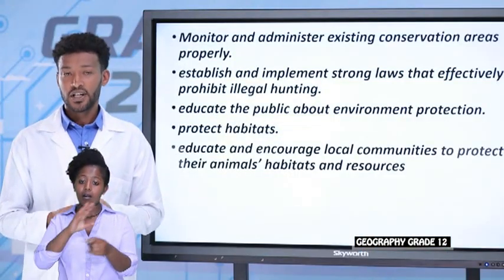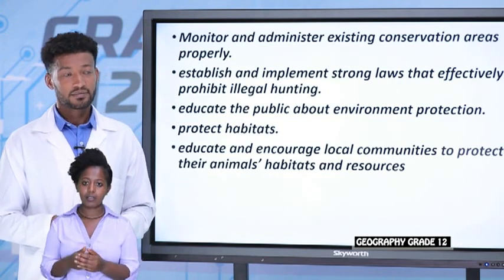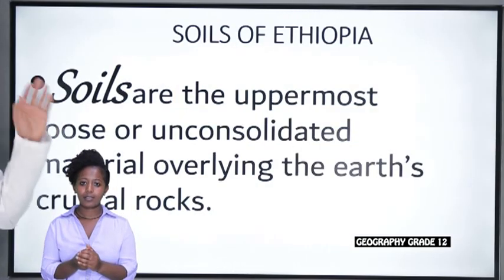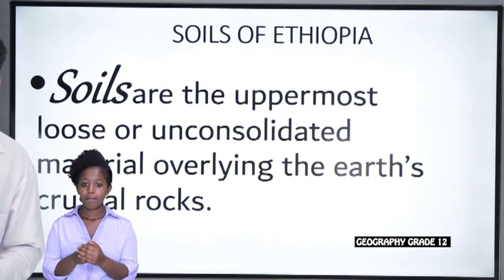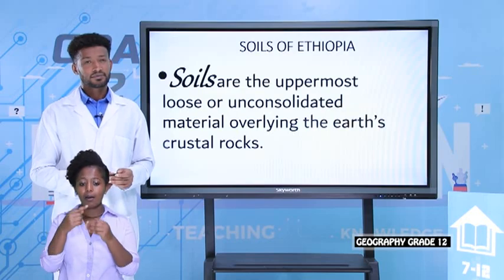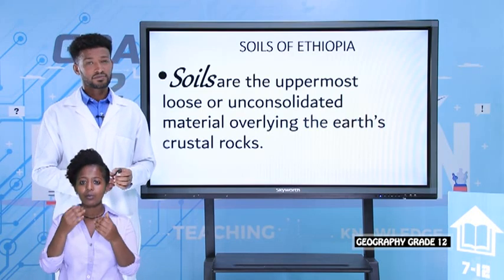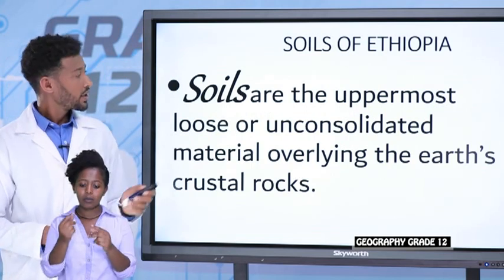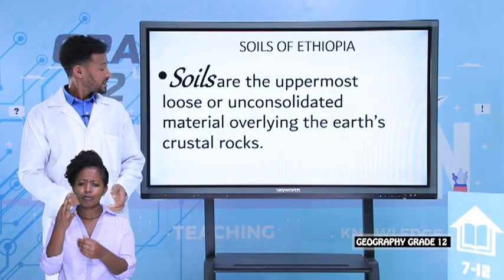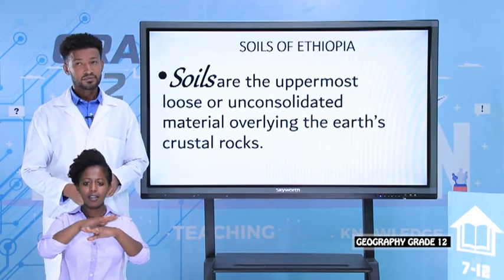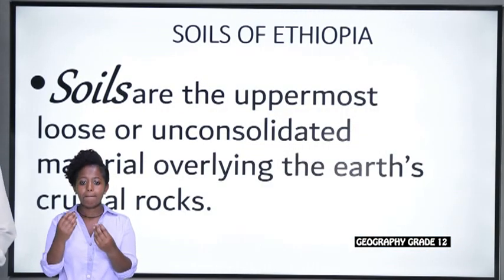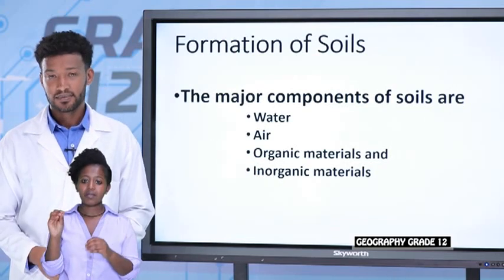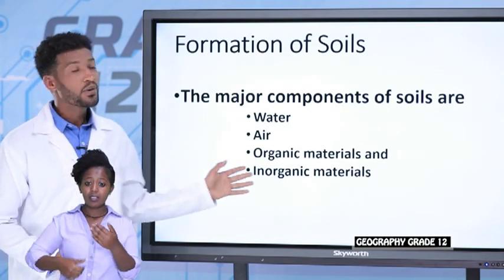We have finished discussing wild animals; now let's talk about soil, the last topic of chapter 3. Soil is the upper loose or unconsolidated material overlaying the Earth's crust layer. This loose material is formed from water, air, organic materials, and inorganic materials — these are the major components of soil.